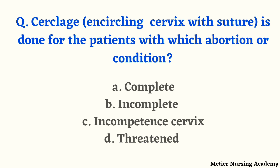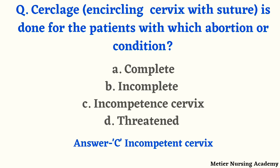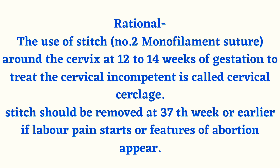Encircling the cervix with a suture is done for a patient with which condition — complete abortion, incomplete abortion, incompetent cervix, or threatened abortion? The right answer is option C, incompetent cervix. The rationale: the use of a number 2 monofilament suture placed around the cervix at 12 to 14 weeks of gestation to treat cervical incompetence is called cervical cerclage. The stitch should be removed at 37 weeks or earlier if labor pain starts or features of abortion are noted.